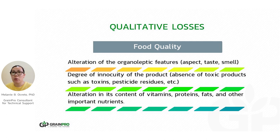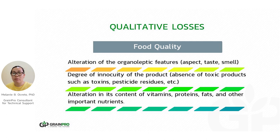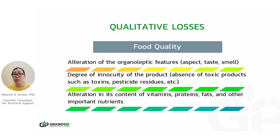We also have food safety to consider. The presence of molds and insects affects the safety of food produced. Molds are a problem because they produce toxins. Some countries have set standards — if the produce has presence of toxins, it would be rejected. Chemical changes also result in changes of nutrient content, including vitamins, proteins, fats, and other important nutrients.